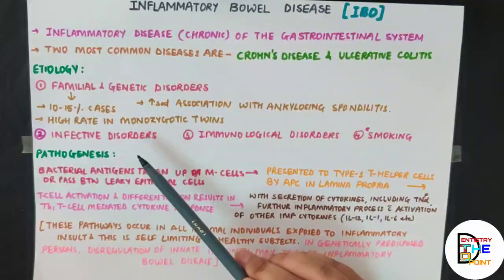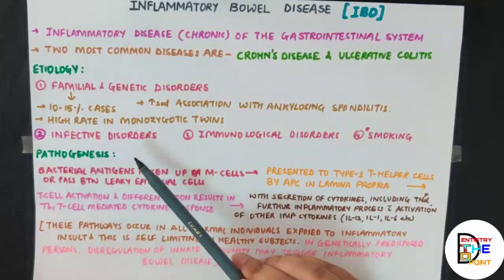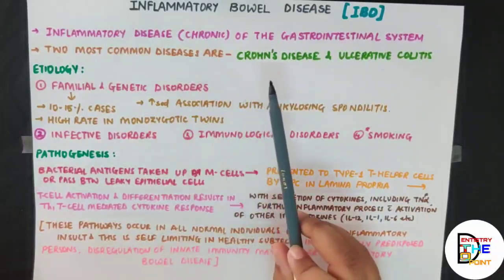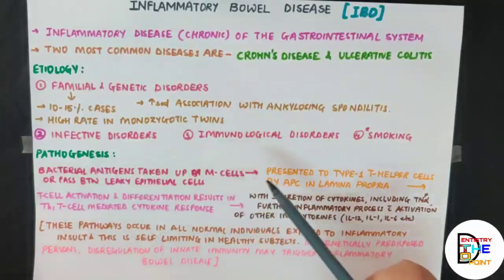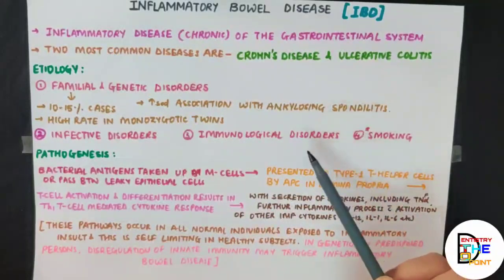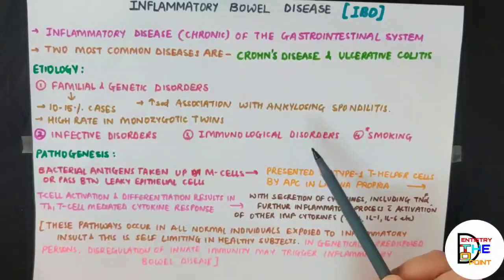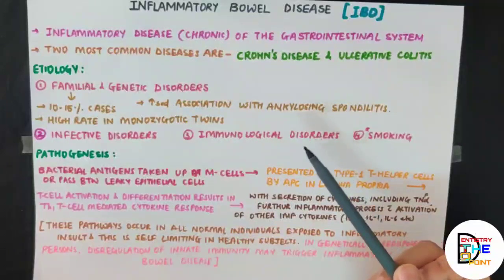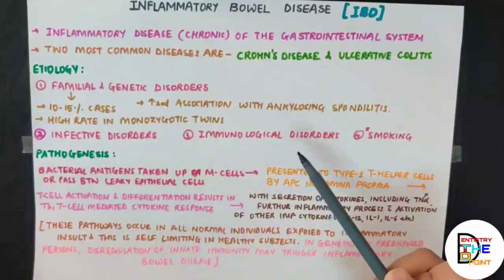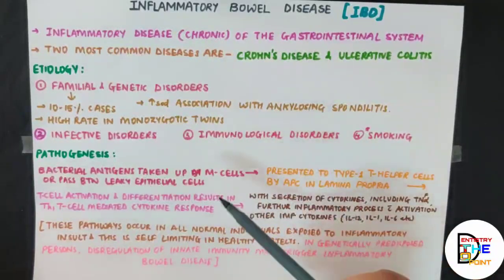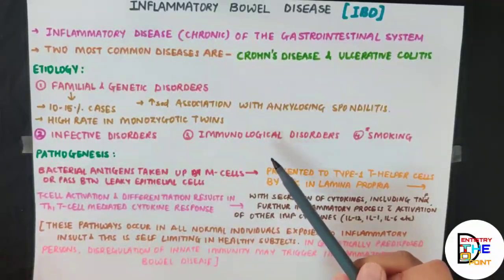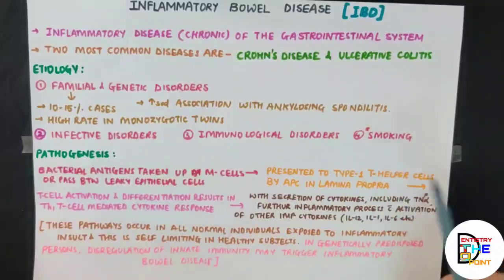The second etiology is infective disorders — when there is colonization or bacterial overgrowth. These bacterial antigens produce inflammatory responses in the mucosa, causing ulcerations and inflammatory bowel disease. Third is immunological disorders: when there is inflammation but no isolation of any infective agent, autoimmunity — where the body causes harm to its own healthy cells — remains a strong possibility.